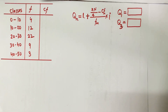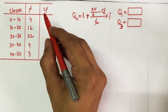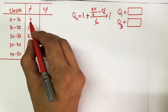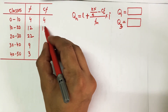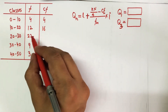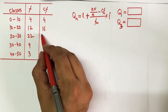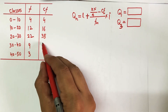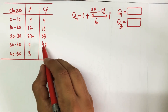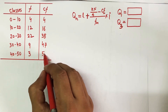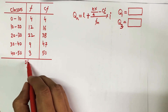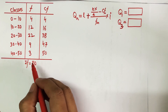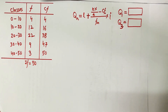Let's start with the procedure. When calculating quartile, median, or any positional average, the first thing you need is the cumulative frequency. The first cumulative frequency is 4. The second is 12 plus 4, which is 16. The third is 22 plus 16, which is 38. Then 38 plus 9 gives 47, and 47 plus 3 gives 50. The last cumulative frequency is 50 — cross-verification: the total of frequencies is also 50.